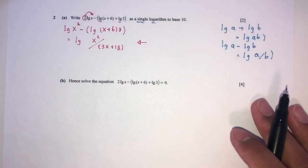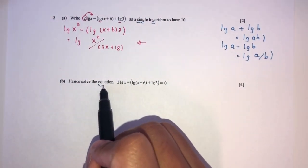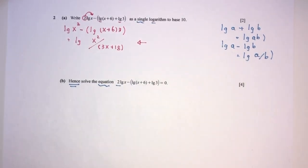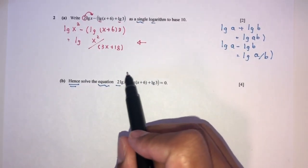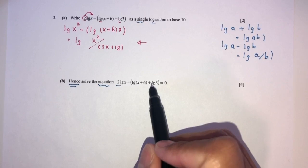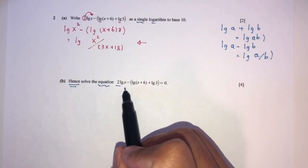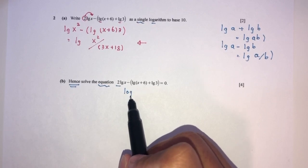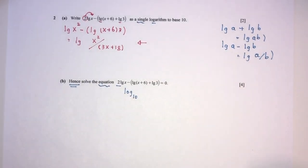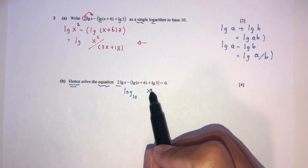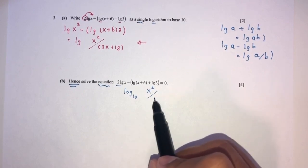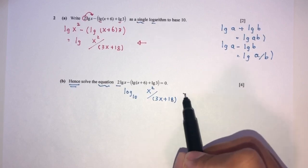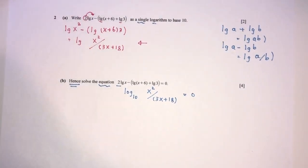For part B, 'hence' means we use part A to solve the equation. We've just seen the expression transform to log base 10 of x squared over (3x plus 18) equals 0. To solve, we send the base to the other side: x squared over (3x plus 18) equals 10 to the power 0, which is 1.